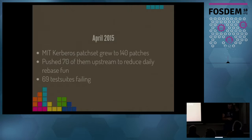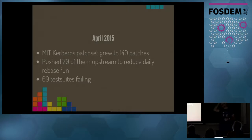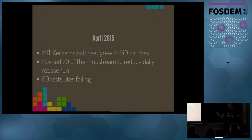In April 2015, the MIT Kerberos patch set grew to 140 patches and we started pushing them upstream to reduce our daily rebase. It was the most fun we had because people did not look at our branch, things were breaking often on a daily basis, and we needed to rebase every day. During that time we still had 69 test suites failing.